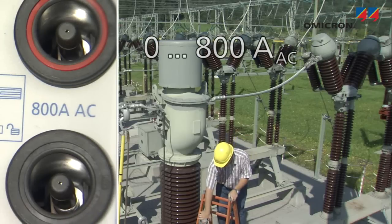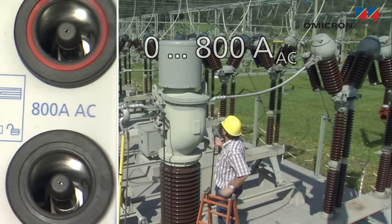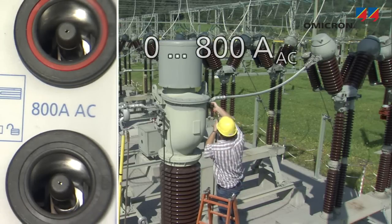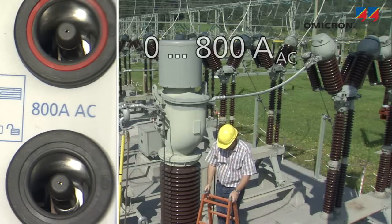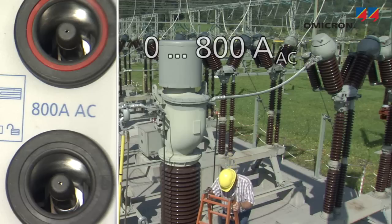The 800 amp high current output is mainly intended for testing current transformers. The CPC also verifies the CT's polarity by comparing the phase angles of primary and secondary current.